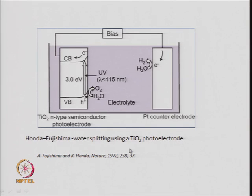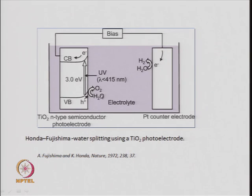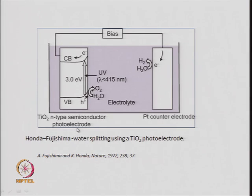This is the work published in Nature in 1972. In the electrochemical cell you have two electrodes. The cathode is made of titanium dioxide with a band gap of around 3.1 electron volts. This is the valence band and the conduction band of titanium dioxide — it is an n-type semiconductor. This is the photo electrode: when you do an electrochemical reaction in the presence of light, you shine light on one electrode, which is called the photo electrode.